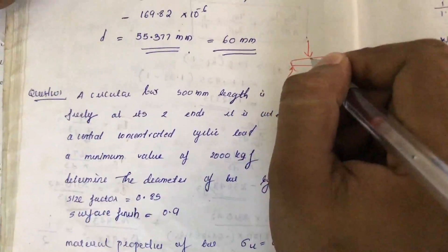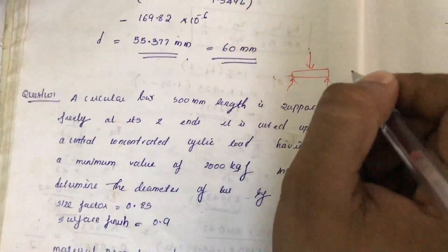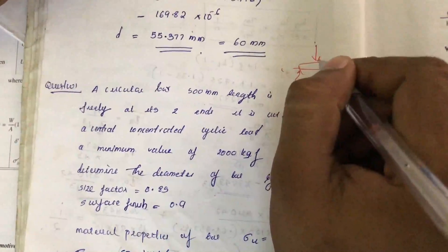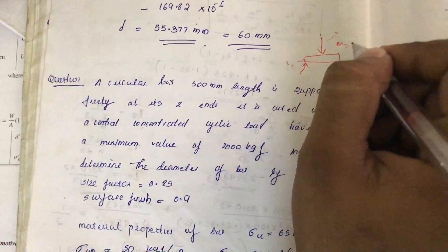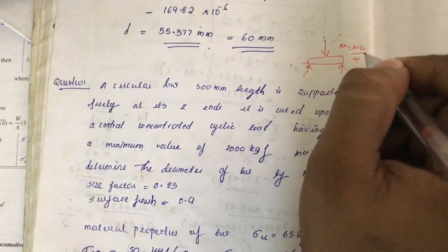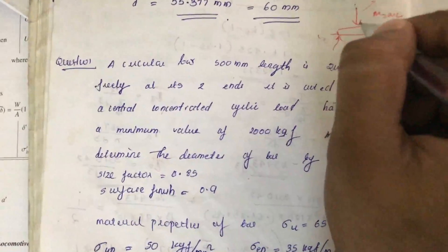The load is acting at the center. This load is not an axial load - it causes a bending moment. For a centrally acting load, that moment equals WL/4, where L is the length of the bar and W is the force or load.